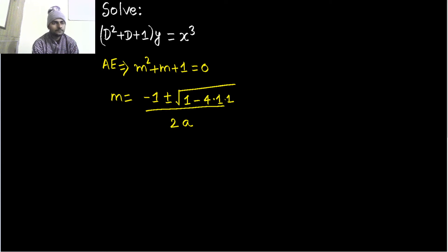And a is 1, minus under root of minus 3. So you can write that as root 3 iota, because under root minus 1 is iota. This is what we have got.